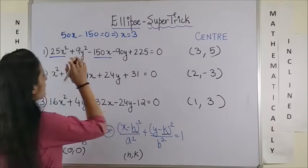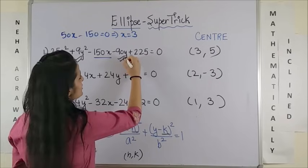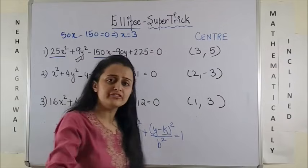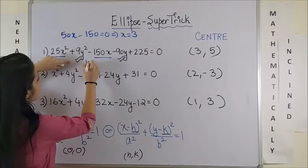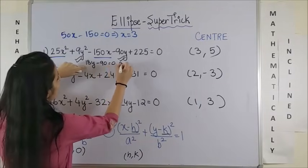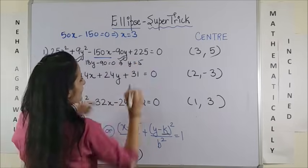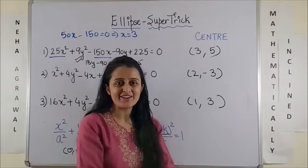Likewise, in order to get the y coordinate, look at the terms which are containing y and differentiate them with respect to y. So, this is 18y minus 90 equal to 0, which gives us y is equal to 5. Wasn't that super quick to get your answer as 3, 5?